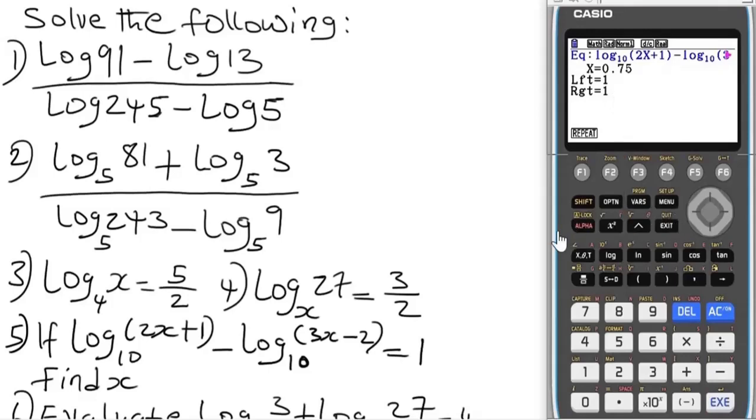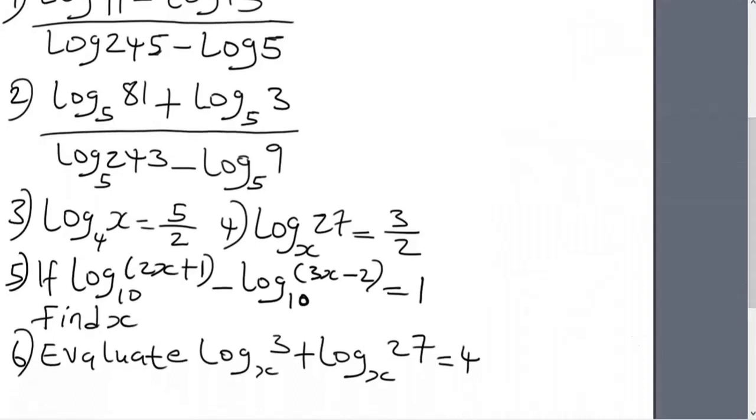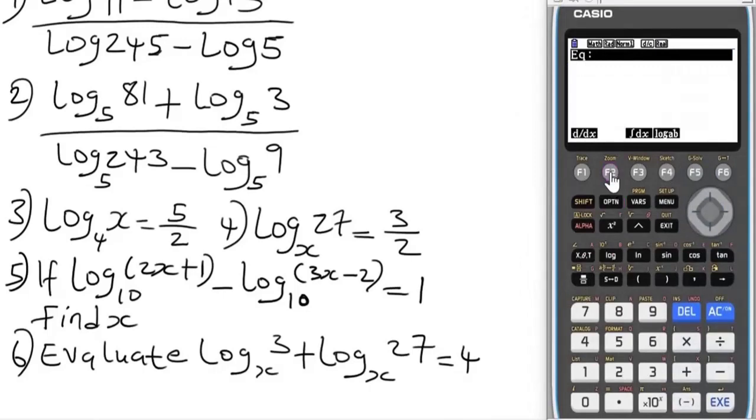Lastly, question six: go back to option, math, log button. Log base x of 3 plus log base x of 27 equals 4. Press equals, assign x to be zero, press equals again and it will solve. That's how simple it is.